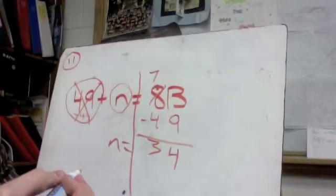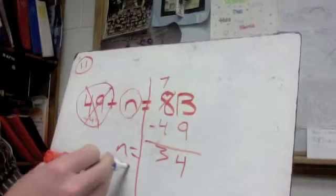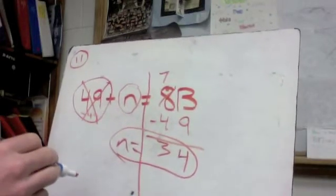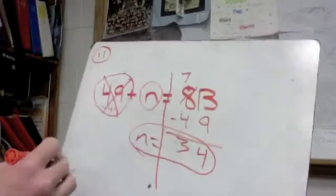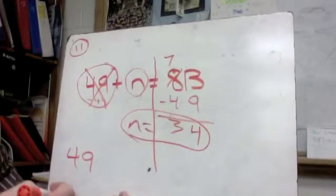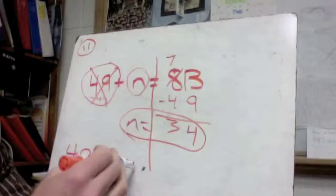As far as points go on the quiz, what you just did with the inverse operations were 2, this answer is going to be worth 1, and then the checking part is going to also be worth 2 for 5 altogether. So for the checking part, we just need to rewrite the actual problem. We know now that 34 is n, so I'll just put it in here, plus 34 equals 83.